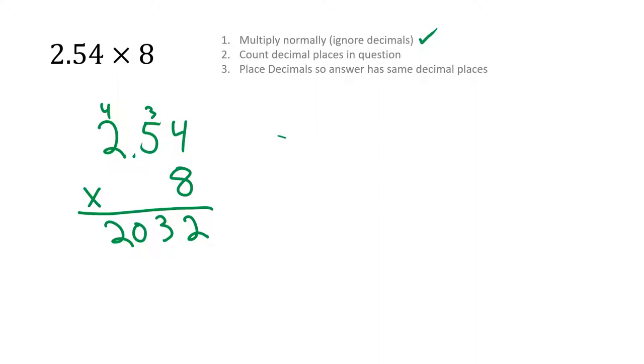Now we're going to count the decimals in our question. After the 2, we had one decimal place and then another decimal place. So that's 2 decimal places.